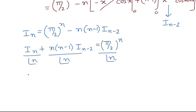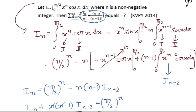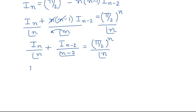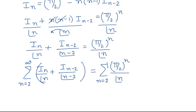This gives us I_n / n! plus I_{n-2} / (n-2)! equals (π/2)^n / n!. Now applying the summation on both sides from n = 2 to infinity, we get the summation of I_n / n! plus I_{n-2} / (n-2)! equals the summation of (π/2)^n / n! from n = 2 to infinity.